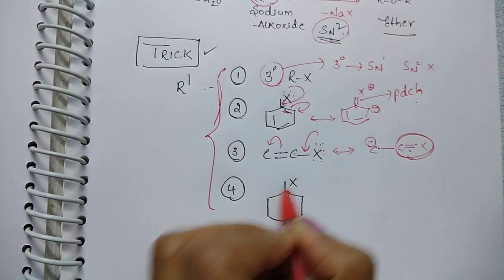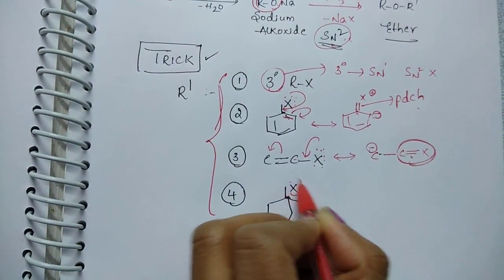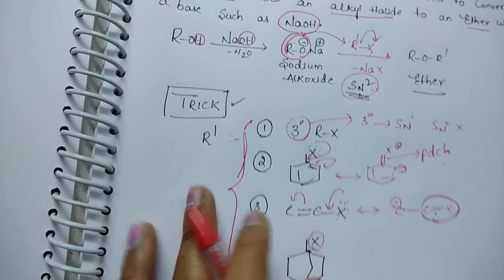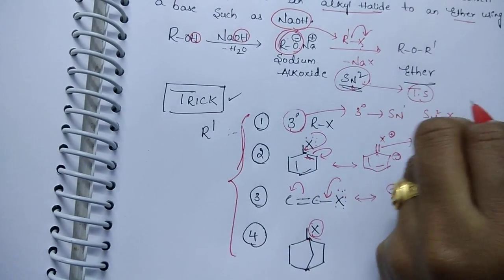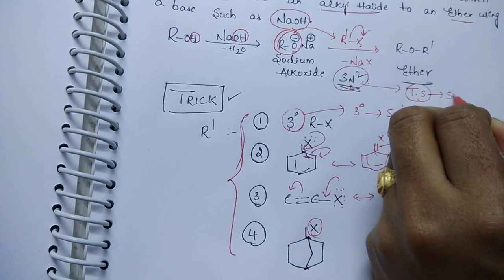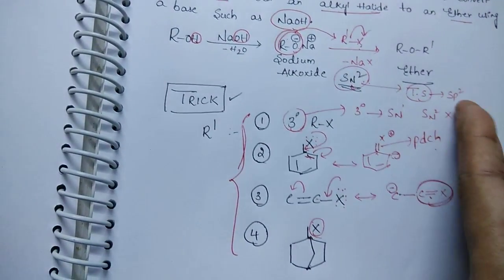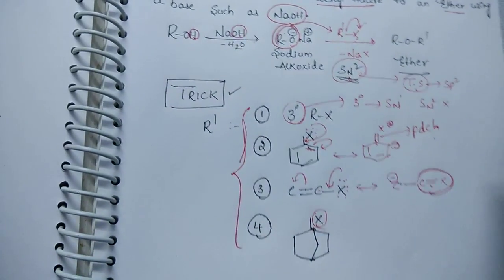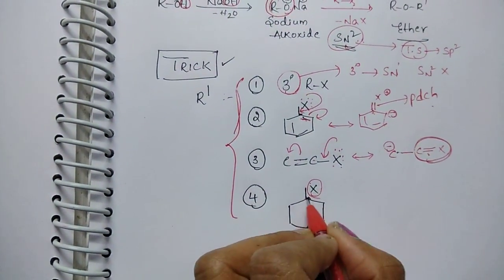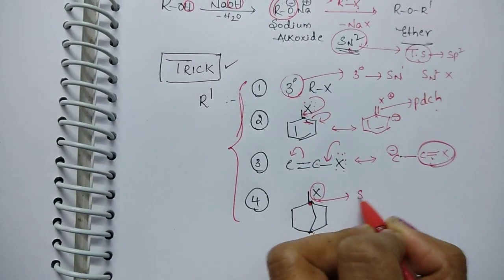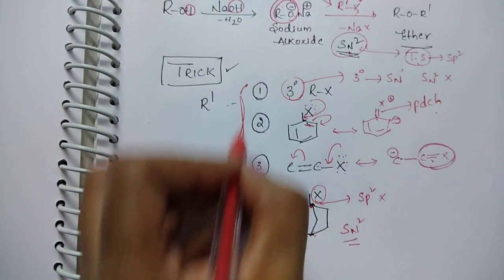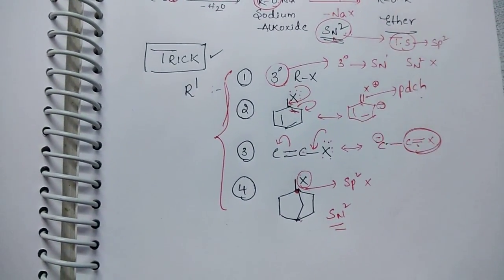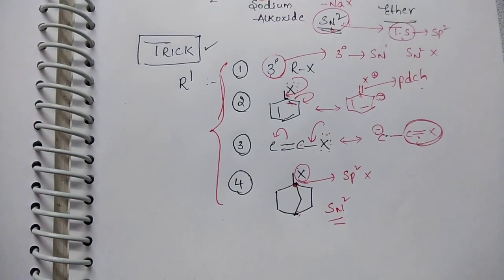In the case of a bridgehead halide, the SN2 mechanism proceeds through a transition state with sp2 hybridization. However, the bridgehead carbon cannot adopt sp2 hybridization, so SN2 mechanism is not possible. In all four of these cases — tertiary, aryl, vinyl, and bridgehead — SN2 is not possible, and these alkyl halides should not be used in Williamson ether synthesis.